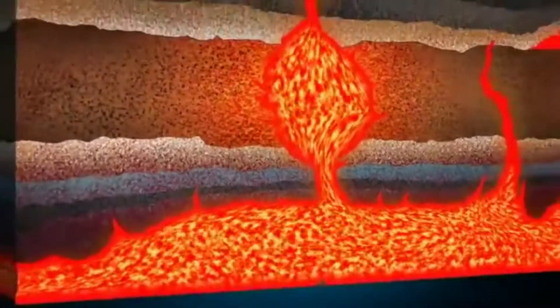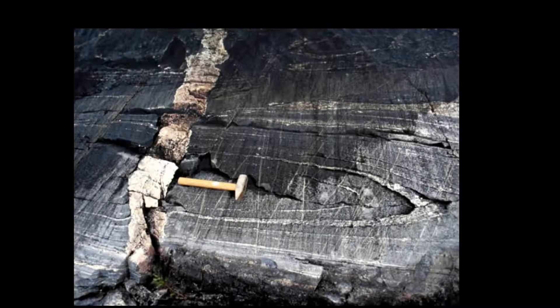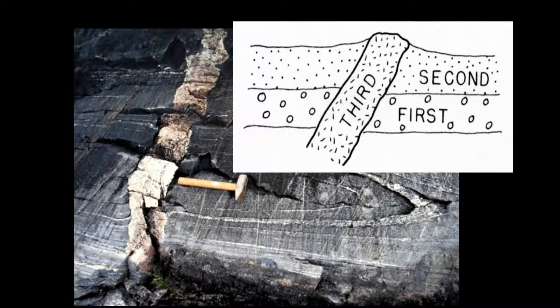The next law is the law of cross-cutting relationships, usually applied to volcanic intrusions. You can see layers of older material with a third material cutting through them. You cannot have something cutting through material if it is older than that material. So layers one and two had to be deposited first, making them definitely older than layer three. By dating layer three — likely igneous rock using uranium-lead radiometric dating — we know layers one and two are at least as old as that intrusion.